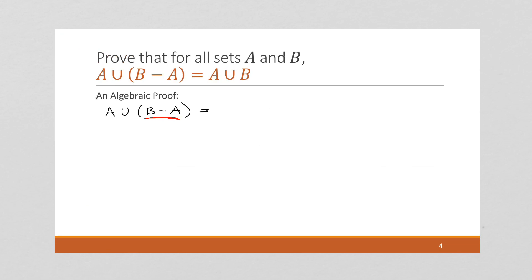So this is equal to A union (B intersect A complement). And this is by the set difference law.